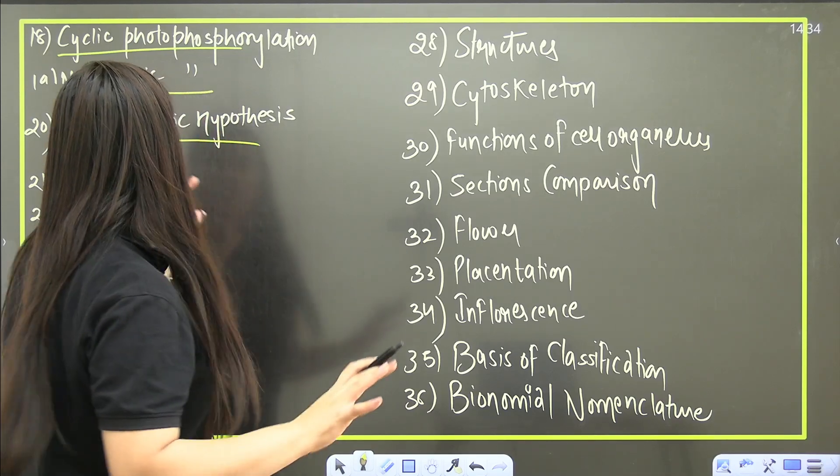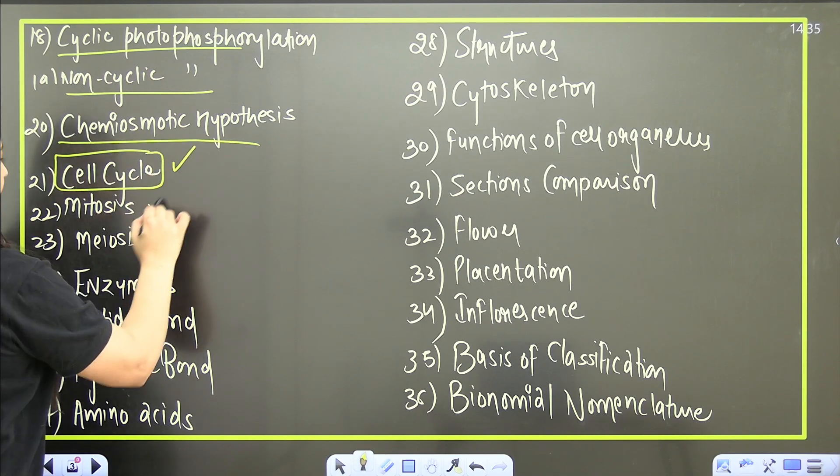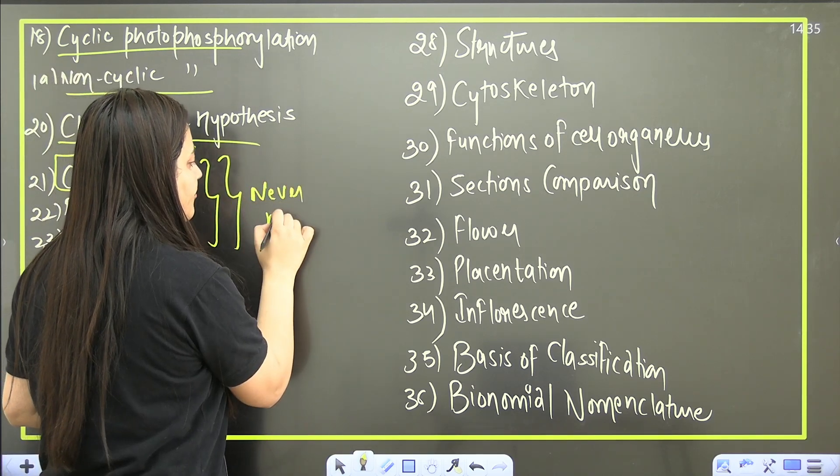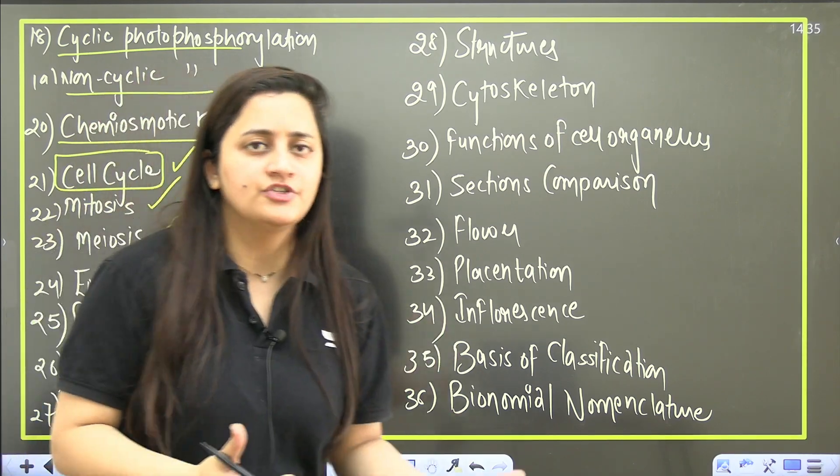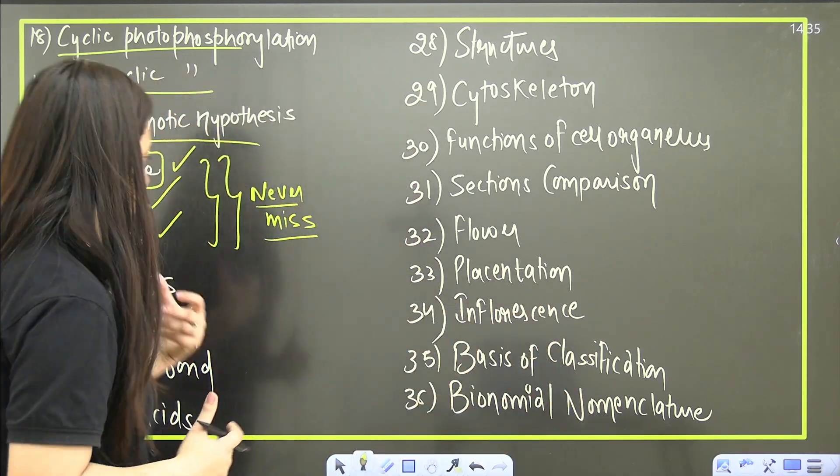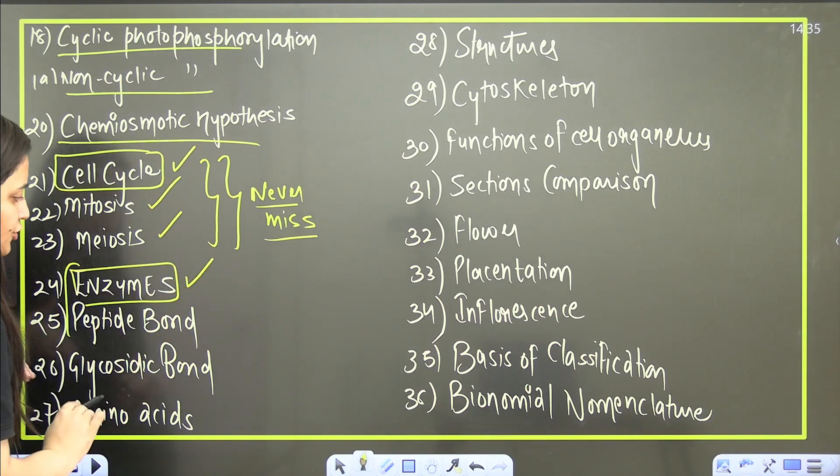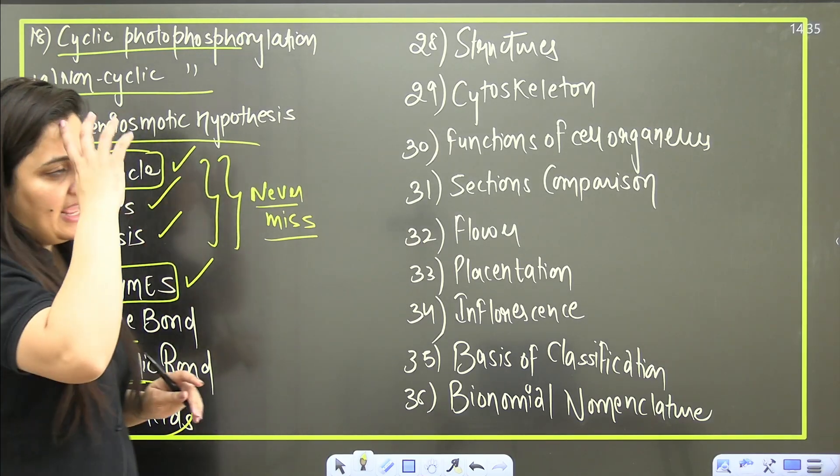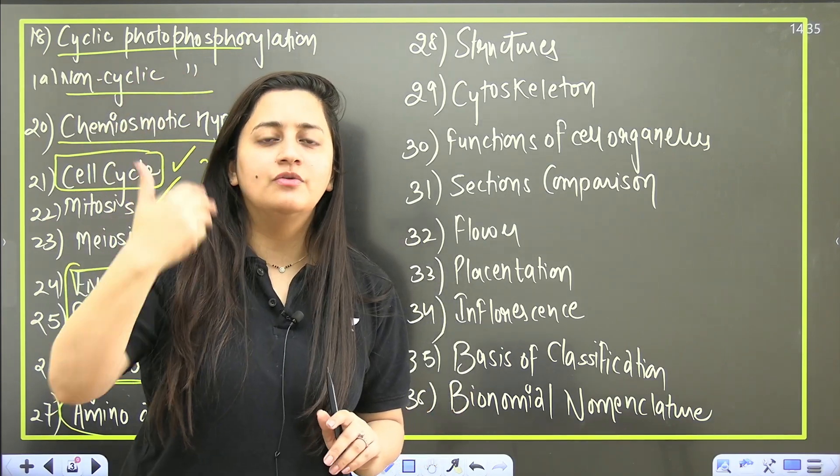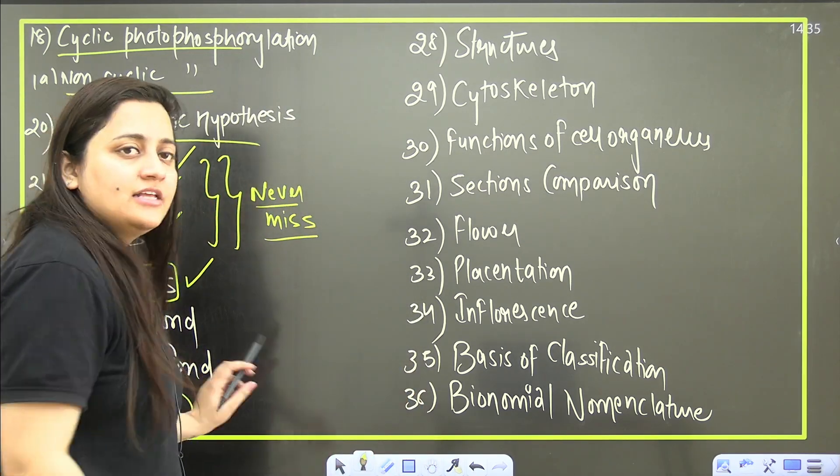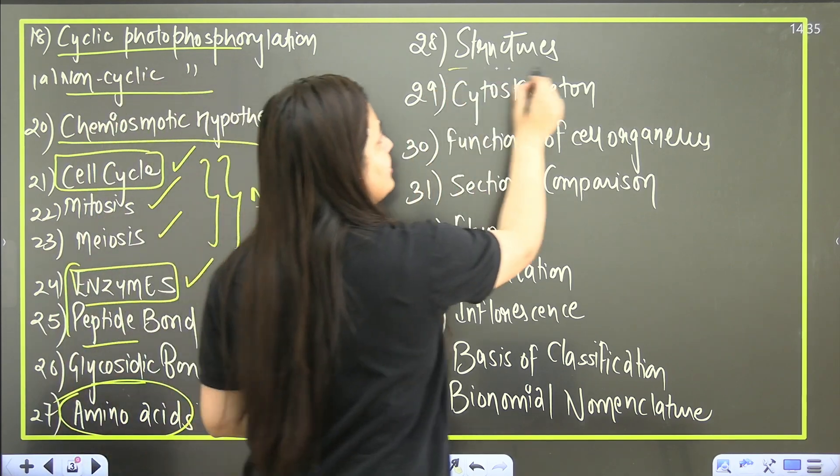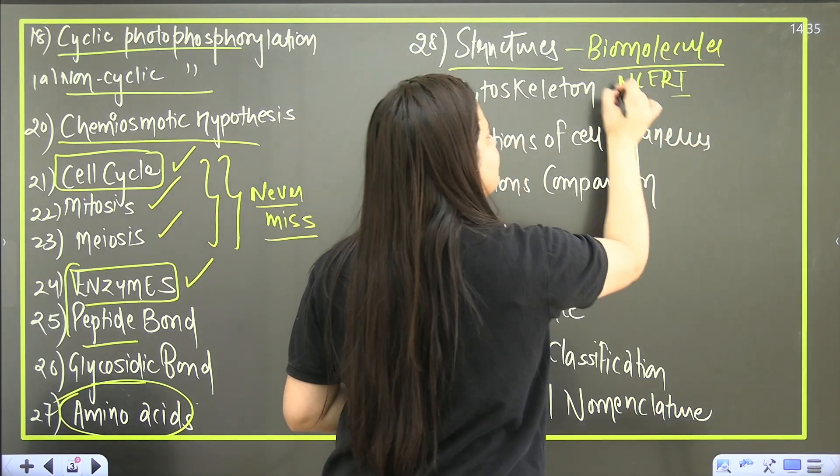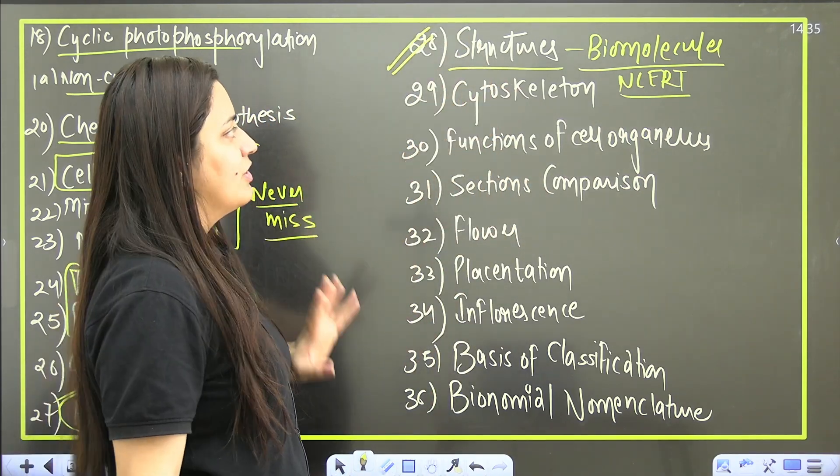Cell cycle itself is very important. Mitosis, meiosis - for sure questions will be there. These are the topics that you should never miss. If you are about to start your revision, please make sure that you start from these particular questions. Enzymes from biomolecules - one should not miss it. The bond formation - peptide and glycosidic bond formation. Then amino acid - which amino acid is neutral, which one is acidic, basic, the aromatic one, the zwitterion. The structures which are given in your biomolecules - please do not miss those structures.